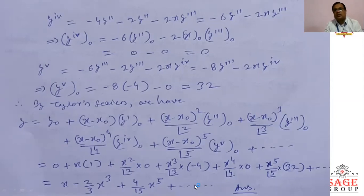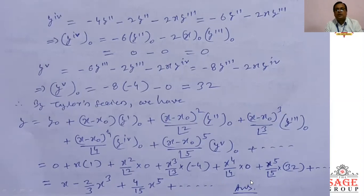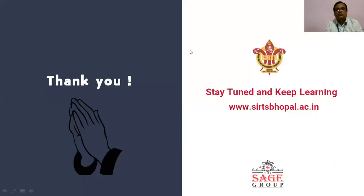So the derivative terms cancel and we get y = x − (2/3)x³ + (4/15)x⁵ + … as an infinite series, which is the numerical solution of the given differential equation. Okay, thank you.